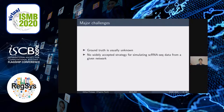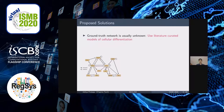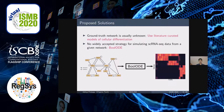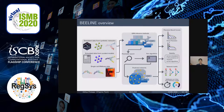However, we faced several challenges. First, you need a ground truth network to evaluate the accuracy of the inferred network. The ground truth networks underlying experimental scRNA-seq data are usually unknown, so people typically evaluate on simulated data, but there is no widely accepted strategy for simulating scRNA-seq data from a given network. To overcome the lack of ground truth networks, our main idea was to use boolean models of cellular differentiation curated from the literature. We developed BoolODE, which converts a boolean model to a system of ordinary differential equations and performs stochastic simulations to obtain scRNA-seq data.